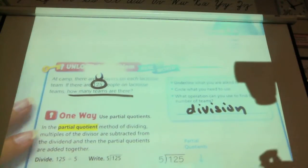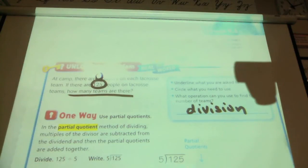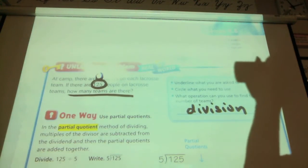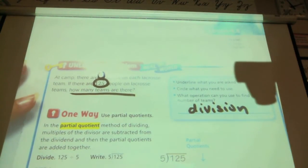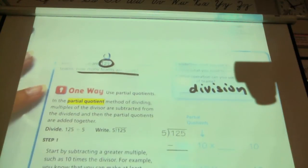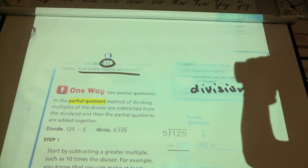We are going to be doing something called partial quotients today. This is very similar to what Jaden showed us in the Choose Three Ways. In the partial quotient method of dividing, multiples of the divisor are subtracted from the dividend and then the partial quotients are added together. So what does all that mess mean?